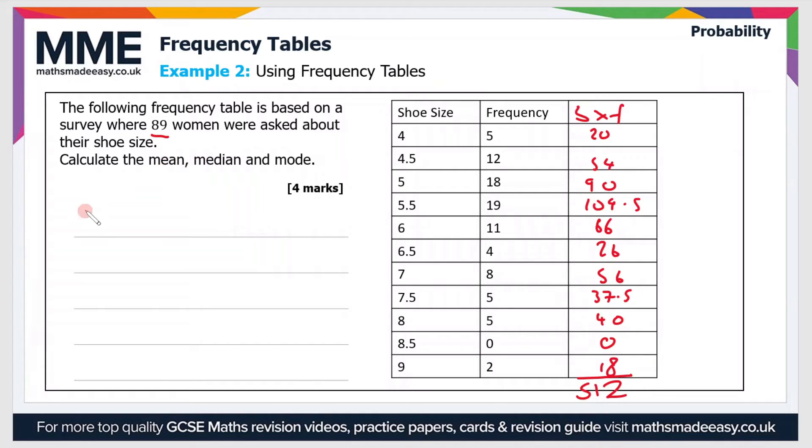To find the mean, it's the sum of the items divided by the total number of items. So that's 512 divided by 89. If you perform that calculation, you should get a value of 5.8 to 1 decimal place.